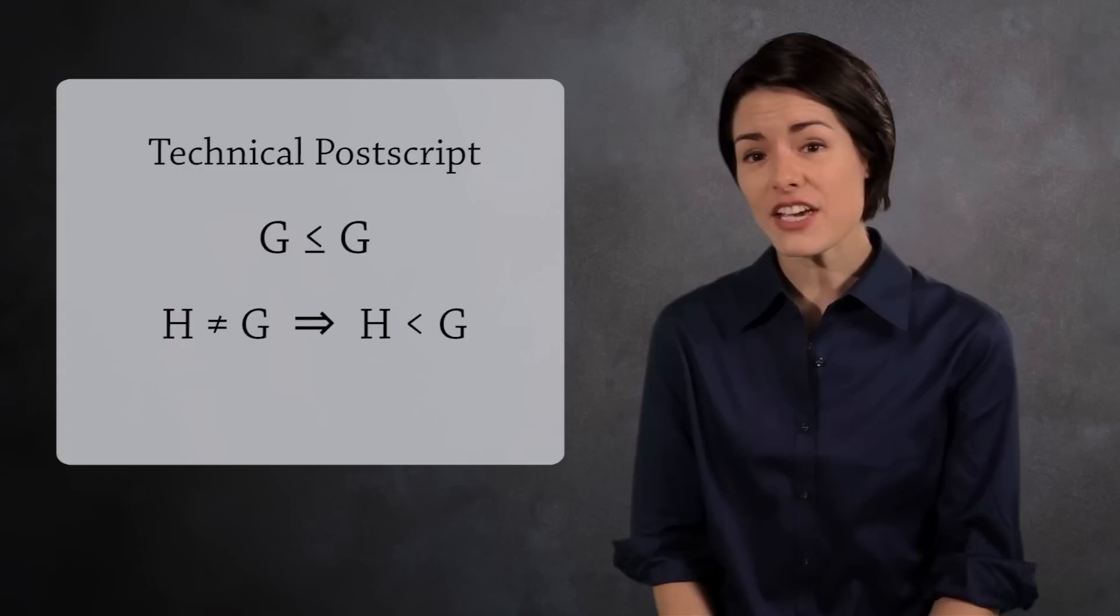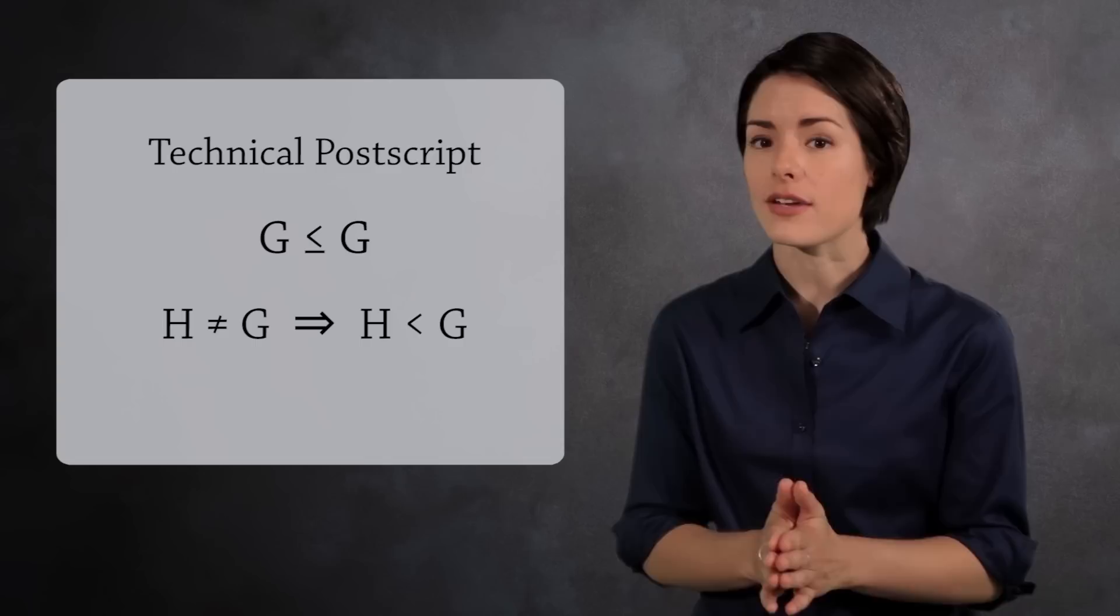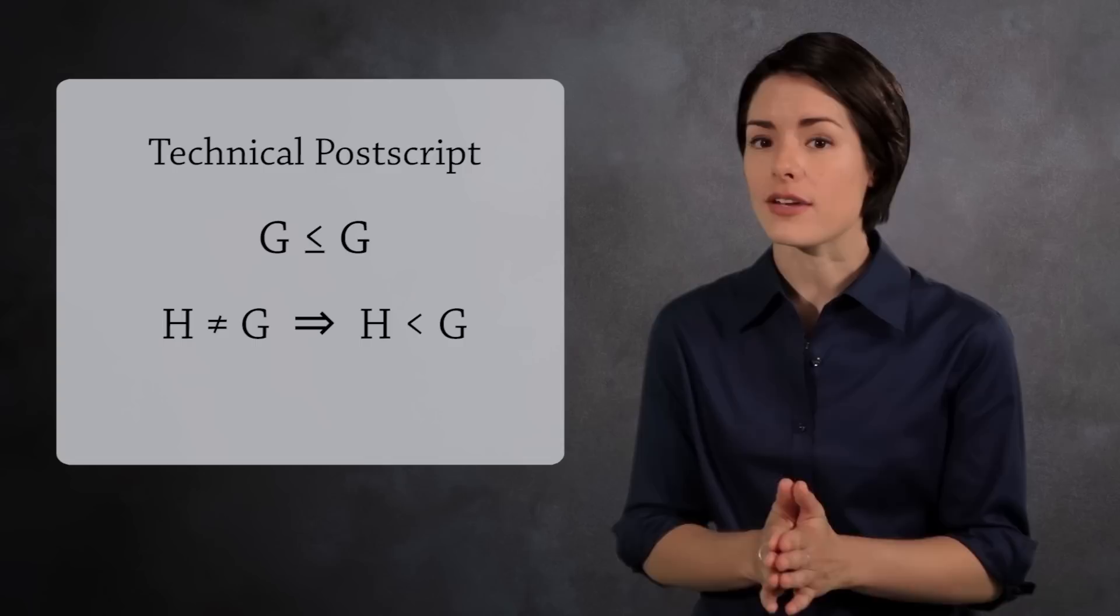If H is not equal to G, then you can simply use the less than sign. Again, you would say this out loud as H is a subgroup of G. Or if you're particularly particular, you could say H is a proper subgroup of G, since H is a proper subset of G.